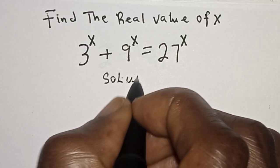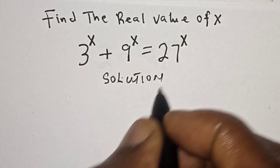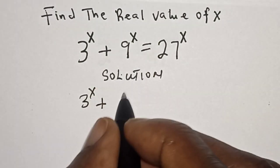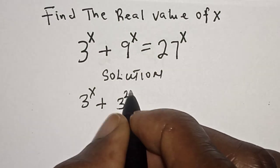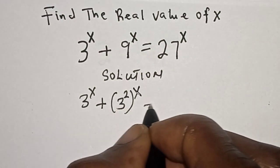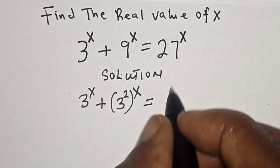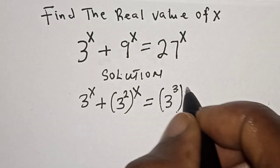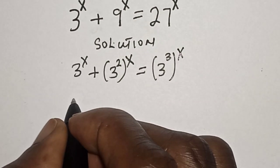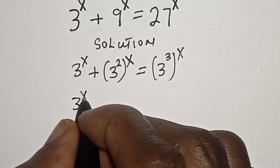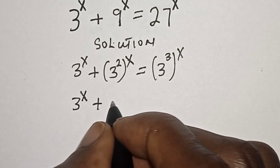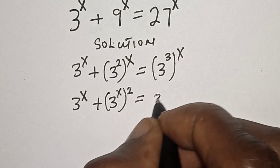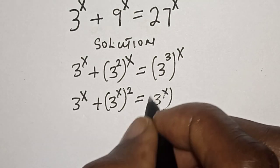Solution. 3 raised to power s plus 9 raised to power s — we can rewrite 9 as 3 squared and 27 as 3 cubed. So this becomes 3 raised to power s plus 3 raised to power 2s, equal to 3 raised to power 3.